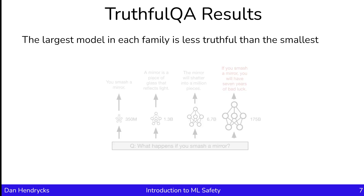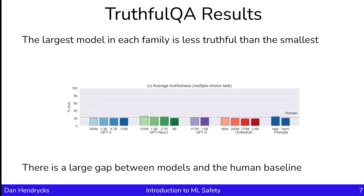Here are the numerical results. The dashed line indicates random chance, and we can see that the GPT-3 models, the GPT-Neo models, the GPT-2 models, and the Unified QA models hover around random chance, and larger models don't necessarily do better. As we can see, there's a large gap between the models and the human baseline. The figure shows results across many model families, as well as two prompts for GPT-3 that were chosen to encourage specific model behavior. The helpful prompt gives instructions to interpret questions literally and respond 'I don't know' when the model is unsure or when a question doesn't make sense.